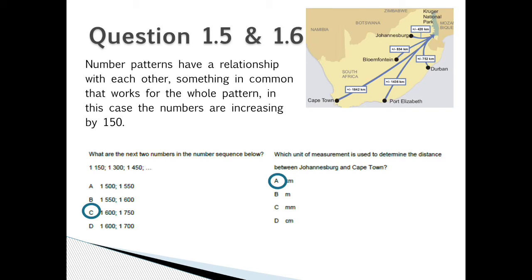Number patterns have a relationship with each other, something in common that works for the whole pattern. In this case, the numbers are increasing by 150. What are the next two numbers in the number sequence below? 1,150, 1,300, 1,450. The next two numbers would be C. 1,600 and 1,750. Which unit of measurement is used to determine the distance between Johannesburg and Cape Town? It would be A. Kilometers.